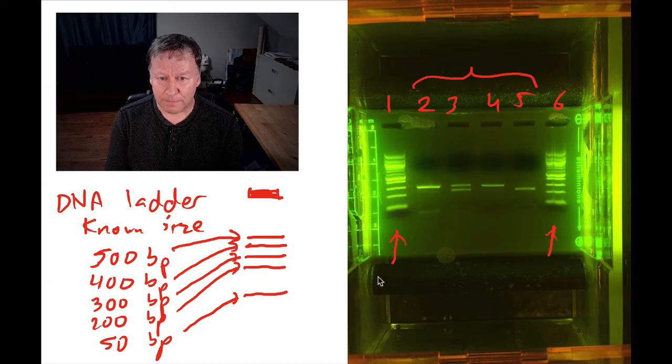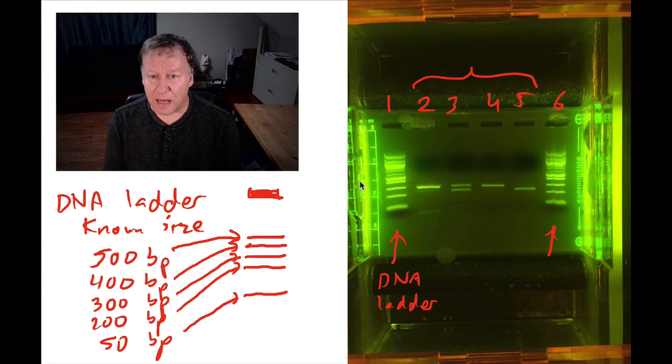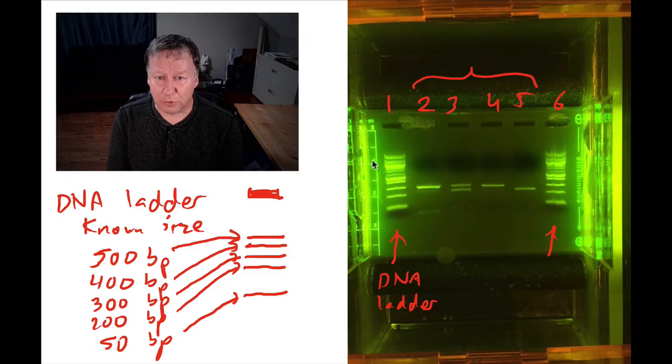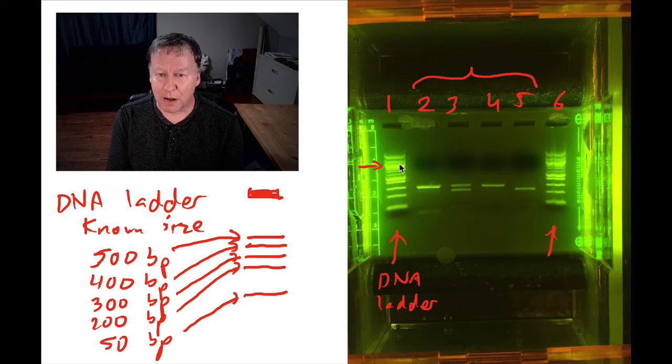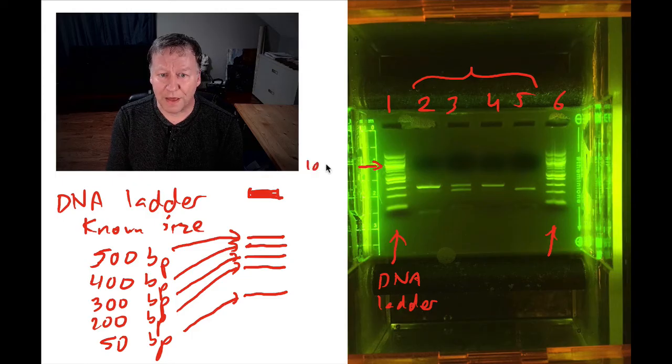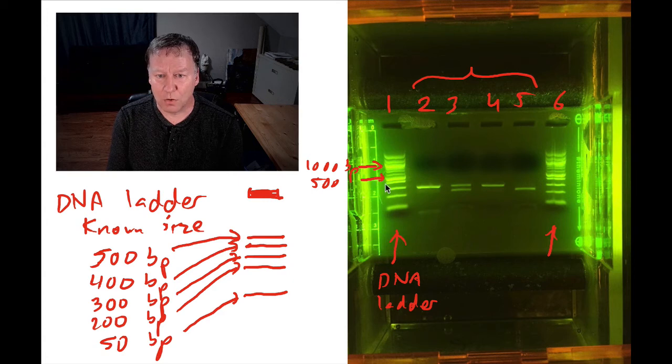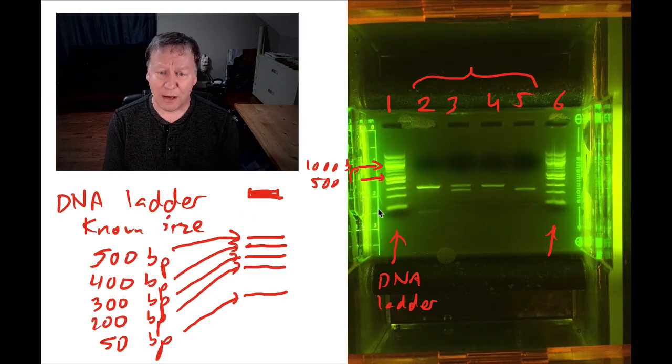In lanes one and lane six, I ran a DNA ladder. This means I have a list of the exact size of each of the pieces you see here. You can see a very bright one right there. The DNA ladder, they tend to include a couple that are very bright to make it easy to identify them. That one right there is 1,000 base pairs in size. The next really bright one is 500. And each one after that is 100 in size, or decreasing 100. So 400, 300, 200, 100.